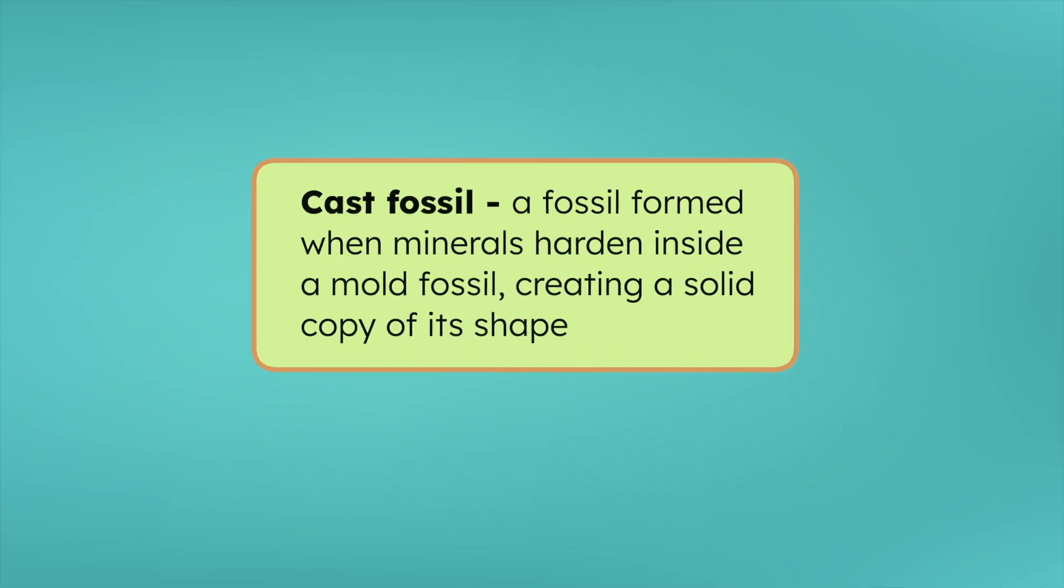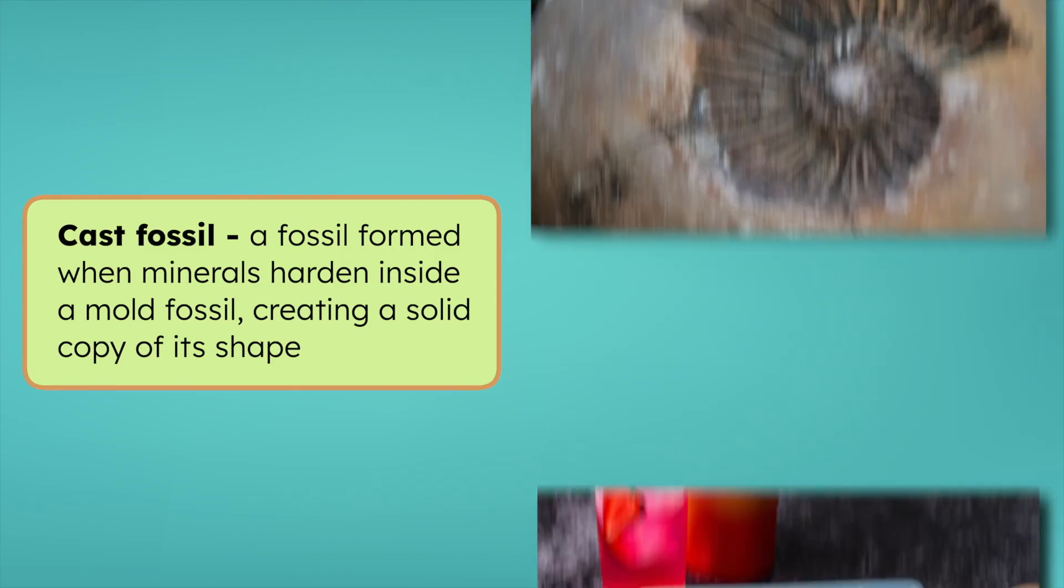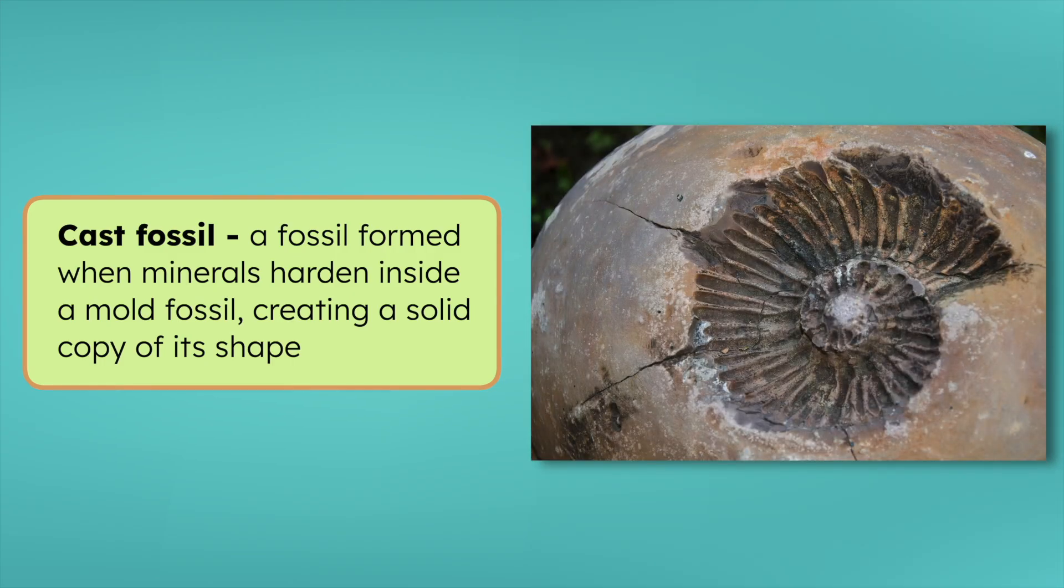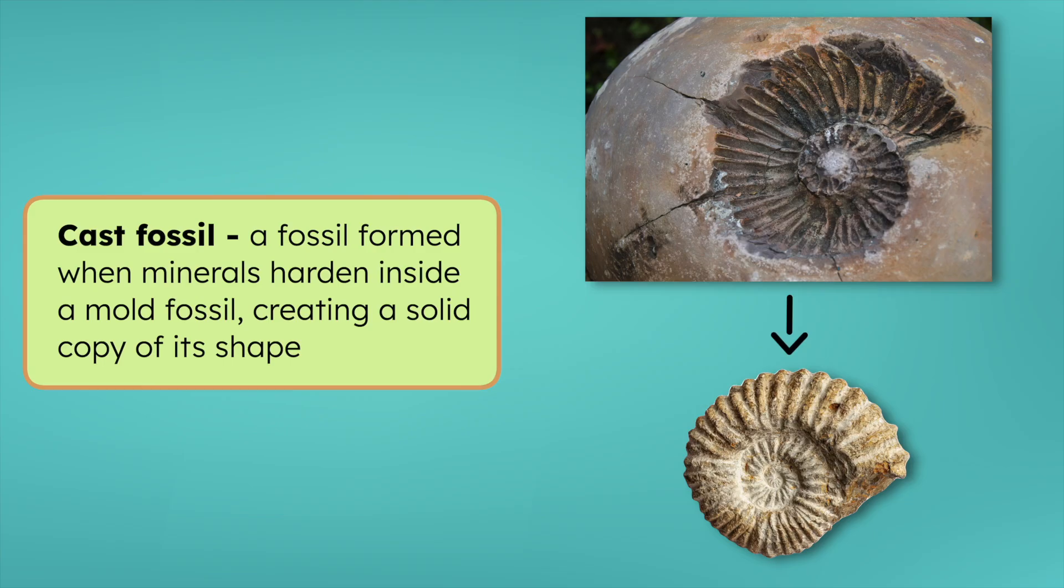A cast fossil forms when that mold fossil gets filled in with minerals. Think of an ice cube tray. When you pour water into the empty spaces and freeze it, the ice takes the shape of the tray. In the same way, minerals fill in the mold fossil and harden, creating a fossil that looks just like the original living thing. But instead of a cold drink, you're left with a fossilized seashell from millions of years ago. Slightly less refreshing, but still very cool.